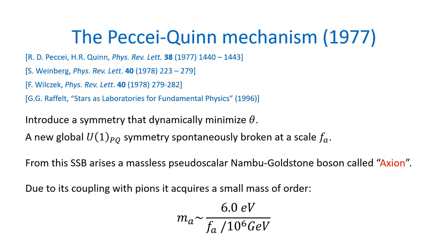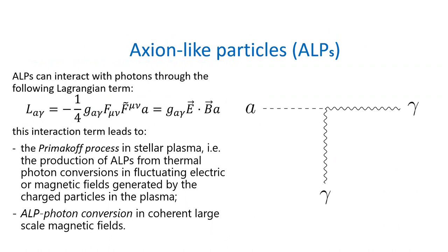If we introduce axion-like particles — particles from other theories like string theory or beyond-standard-model theories that arise in the same way — we call them axion-like particles. They don't have any fixed relation between their mass and the energy scale of the theory. In our minimal model, we take into account only their coupling with photons, related to the Lagrangian term shown on the left-hand side of the slide, where G_aγ is the coupling constant.